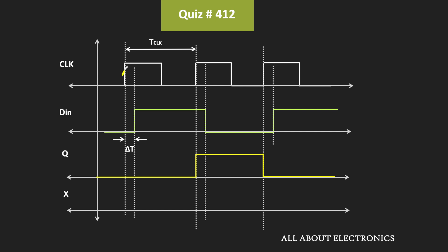At the first clock transition, the data signal DIN is equal to 0, and therefore this Q output will remain 0 until the next rising edge. At the next rising edge, the input signal DIN is equal to 1, and therefore Q output will also become 1, remaining in that state until the next rising edge. At the following rising edge, DIN is equal to 0, so Q output also becomes 0. This is how the Q output of the flip-flop looks.